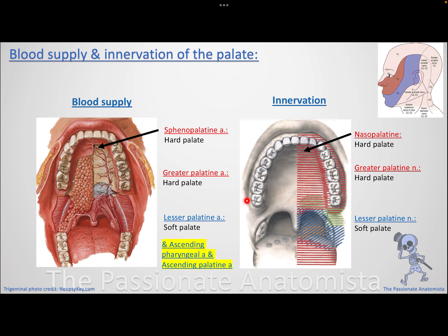For palate innervation and blood supply: since the hard palate is part of the maxilla, its nerve and arterial supply comes from the maxillary nerve and maxillary artery. The greater palatine nerve and artery supply the hard palate (as it is larger), while the lesser palatine nerve and artery supply the soft palate. Remember: 'S for S' — lesser palatine supplies soft palate.